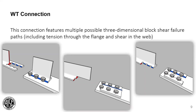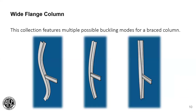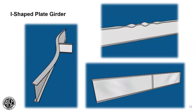The models are designed to each highlight an important feature of behavior. This WT connection collection has a set of models that show three different block shear rupture failure modes, and they're not just static images — you can rotate and zoom these on the website. This collection features multiple possible buckling modes for a braced wide flange column. We have lateral torsional buckling, flange local buckling, shear buckling, and more in the I-shaped plate girder collection.